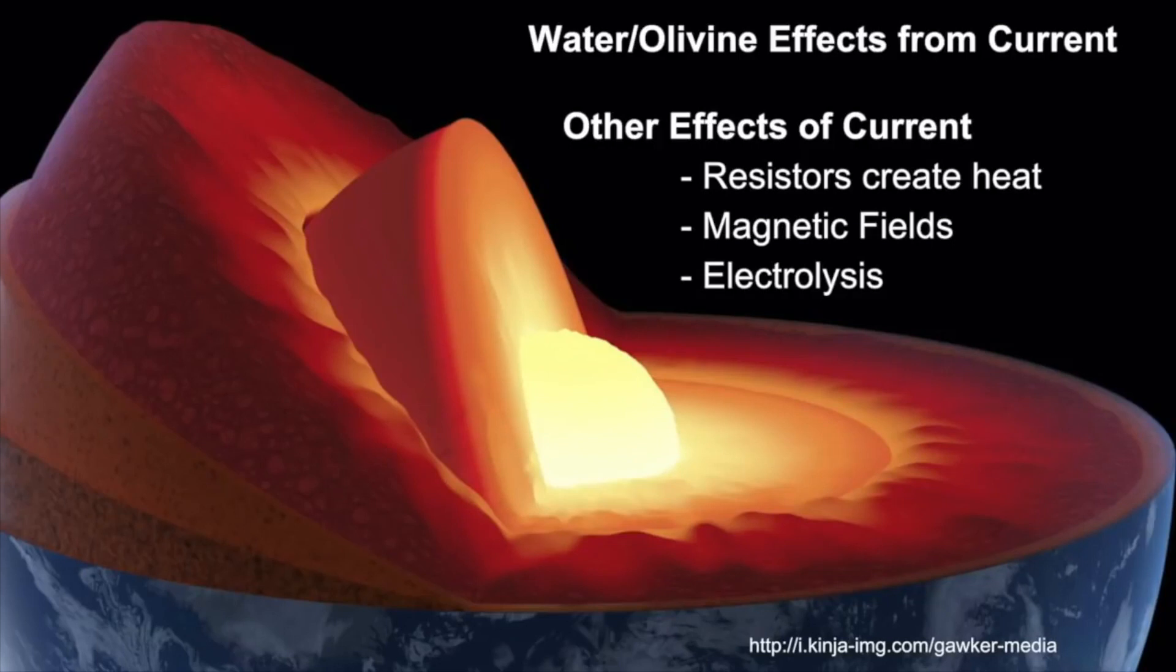Okay, so we have our water and olivine effects from the current. They appear to have the ability to translocate just based on their interaction with electric current. And of course, if you get the electric current down there, you will also have heat created when it interacts with the resistors. You'll have the magnetic fields created by those currents. Then, of course, you'll have electrolysis if it hits the water, splitting into hydrogen gas and oxygen gas, which is extraordinarily volatile.